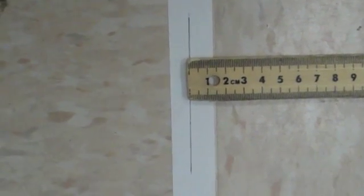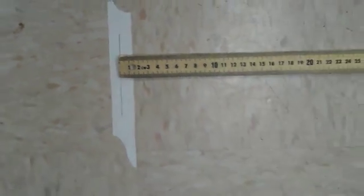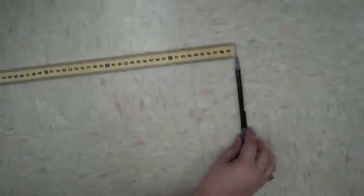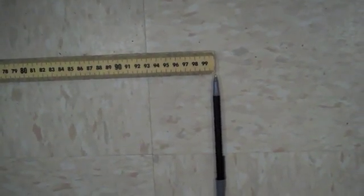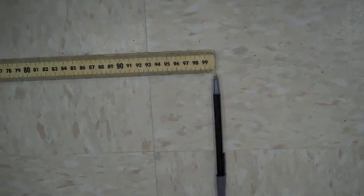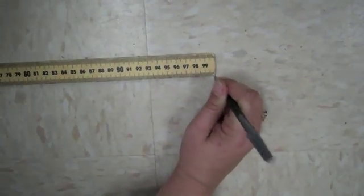Line your meter stick up with the edge, and then mark. You can mark on the object, so you can mark on the floor in this case. And then move the meter stick over.